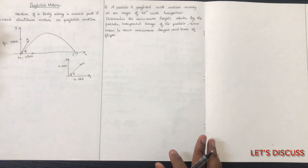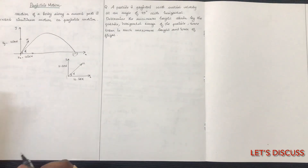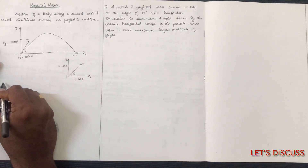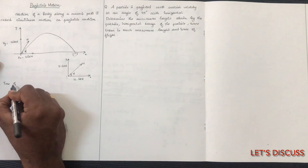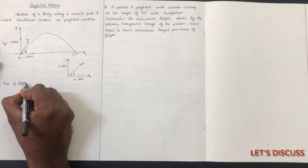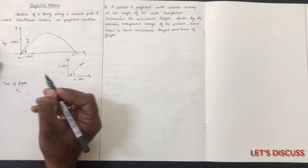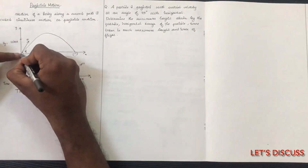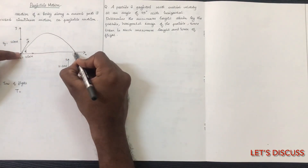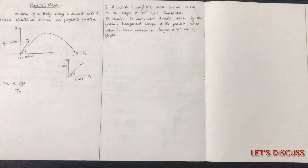Now let's go through the key quantities. The first one is time of flight. Time of flight is denoted T. We will derive the expression for time of flight.